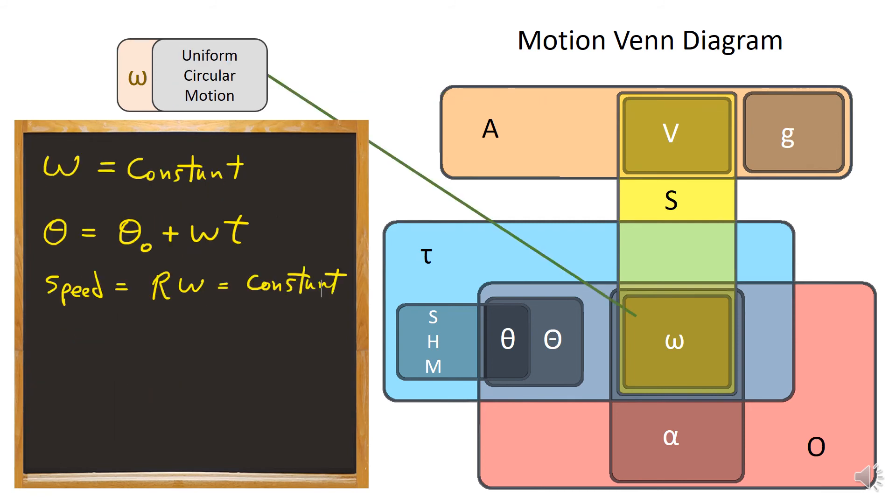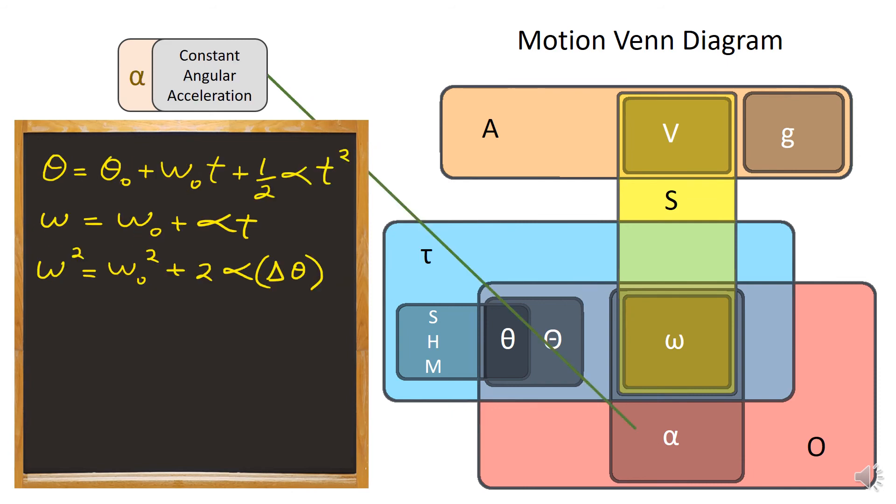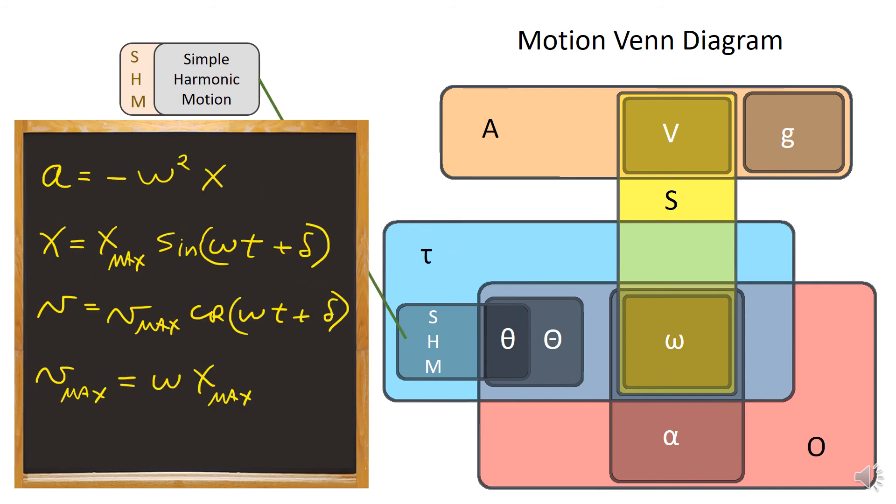We can have a uniform circular motion, which is motion around the circle at a constant speed. And that would be a subset of motion with a constant angular acceleration. Now, if you look at these equations here, they look very similar to the one-dimensional case of motion with a constant acceleration. It's just that instead of position, velocity, and acceleration, we have angle, angular velocity, angular acceleration.